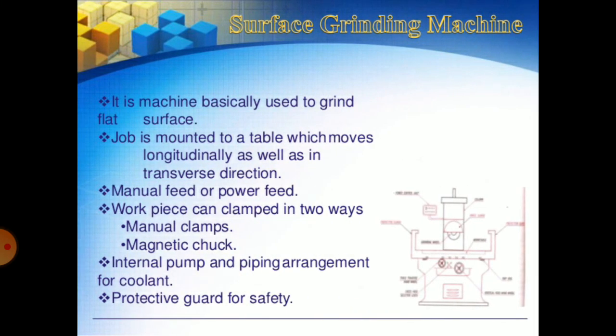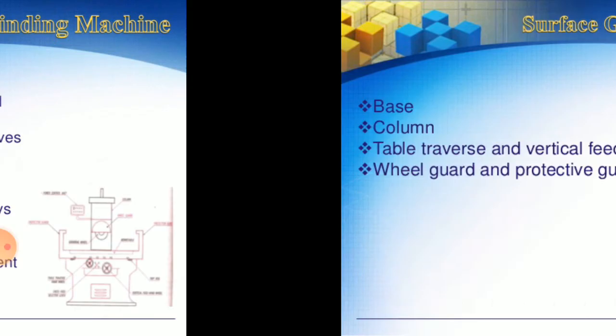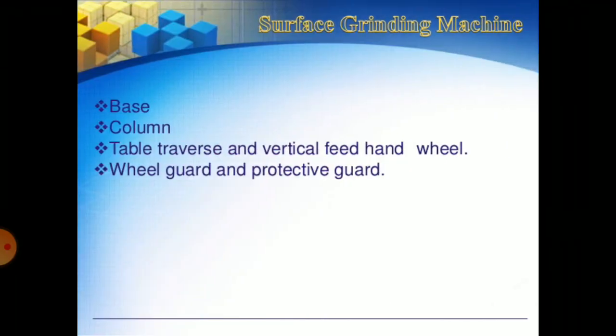The surface grinding machine is basically used to grind flat surfaces. The job is mounted on a table which moves longitudinally as well as in the transverse direction, with manual or power feed. The work piece can be clamped in two ways: manual clamps or magnetic chuck. It also has an internal pump and piping arrangement for coolant, and a protective guard for safety. The machine consists of a base, column, table traverse and vertical feed hand wheel, and wheel guard.